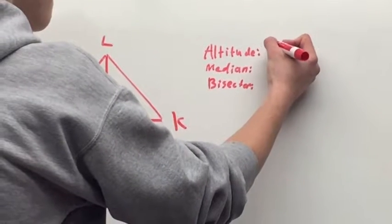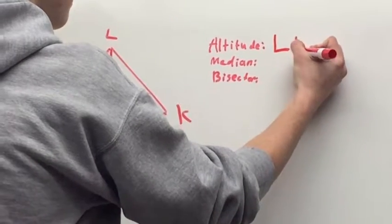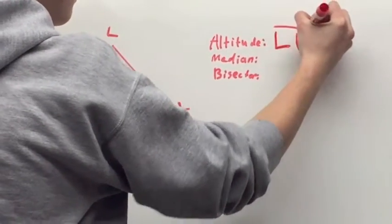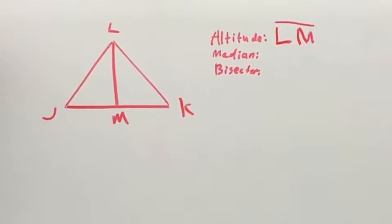An altitude of a triangle is a segment from a vertex to the line containing the opposite side and perpendicular to the line containing that side.